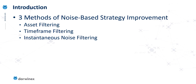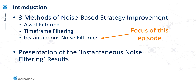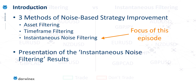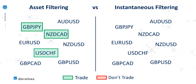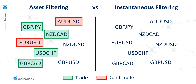These are the three techniques in this series: asset filtering, time frame filtering — both of which we've already looked at — and now we turn our attention to instantaneous noise filtering and specifically the results it can provide. With asset filtering, you effectively choose the assets you're going to trade based on their average noise characteristics, choosing those whose noise characteristics are suited to the trading strategy. All other symbols simply don't get traded.